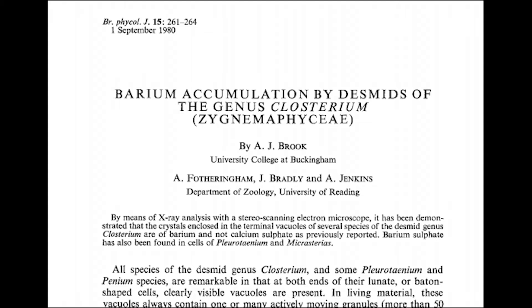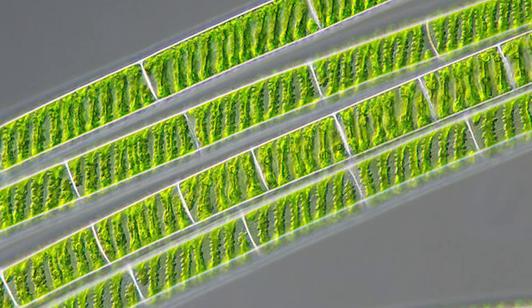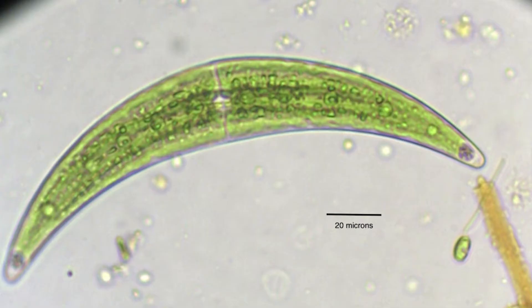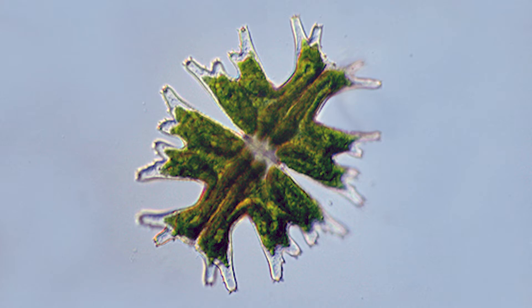So what about the other desmids? Spirogyra is reported to also concentrate barium sulfate, but it is more dispersed throughout the cytoplasm, and it is hard to see the movement. But the genus Closterium and Microsterius are other examples where the crystals are visible.